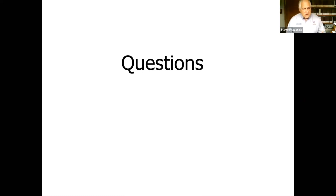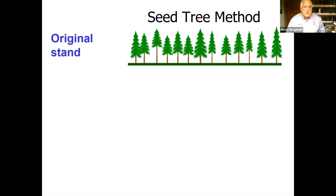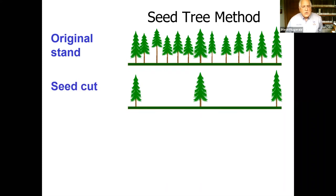Clear cutting tends to be the dominant form of harvesting and regenerating stands, particularly in Western Oregon. Another method that creates an even-age stand is the seed tree method. We take an original stand — maybe 50, 60, 70 years old — and remove pretty much all the trees, except for maybe one to about eight trees per acre. The purpose is to leave good trees that have the capability to produce cones.